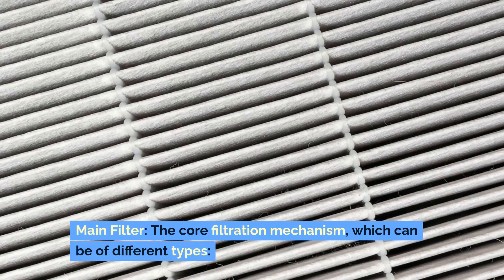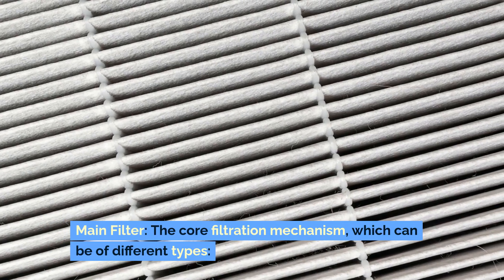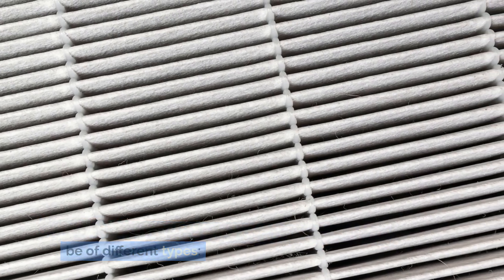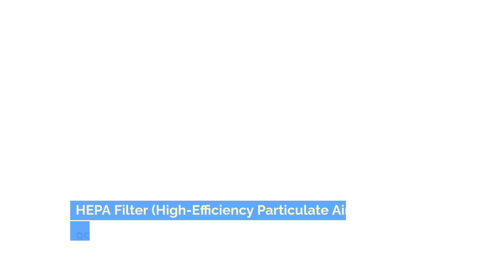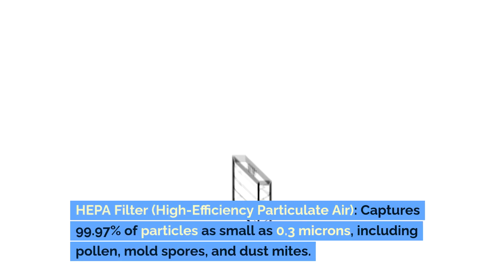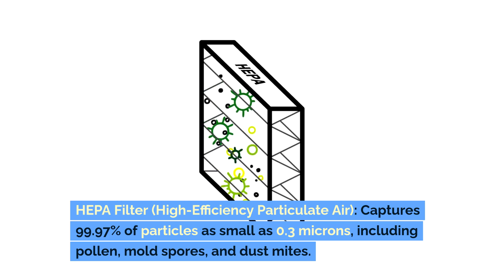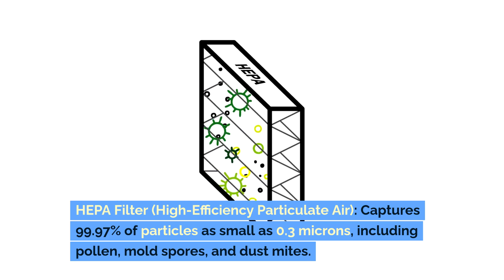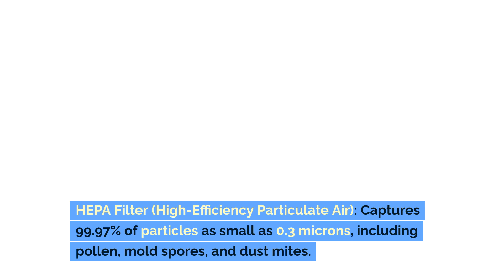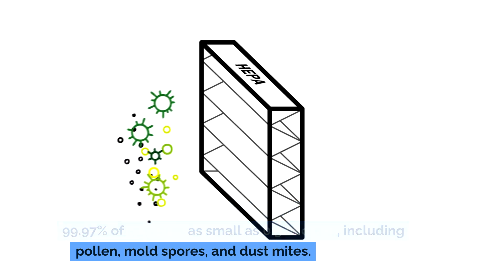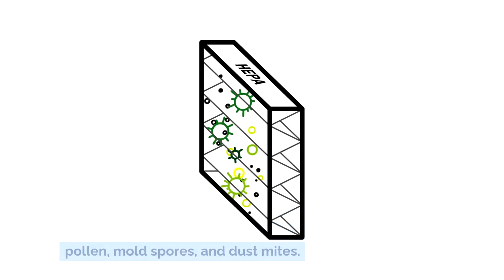Main filter: the core filtration mechanism, which can be of different types. HEPA filter — high-efficiency particulate air — captures 99.97% of particles as small as 0.3 microns, including pollen, mold spores, and dust mites.